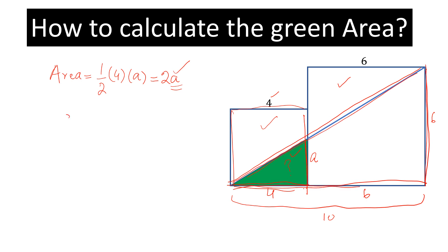So we can write A by 4 is equal to 6 by 10. Then, if we simplify this, we get 24 by 10 and A is equal to 2.4.